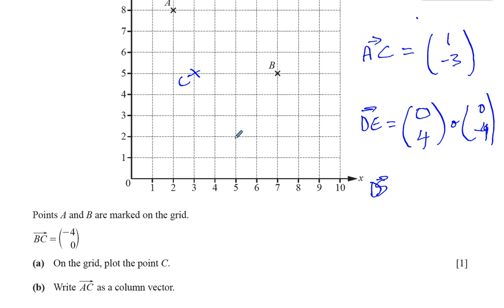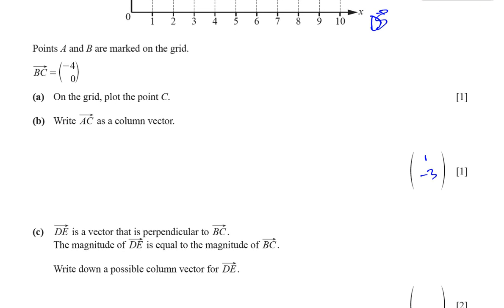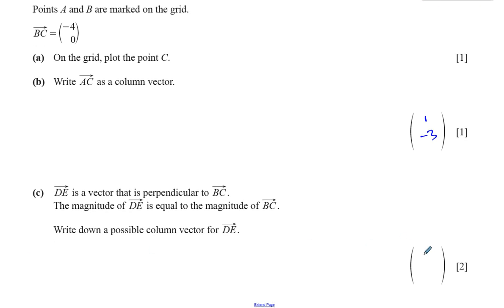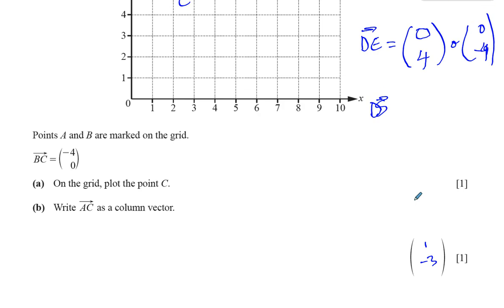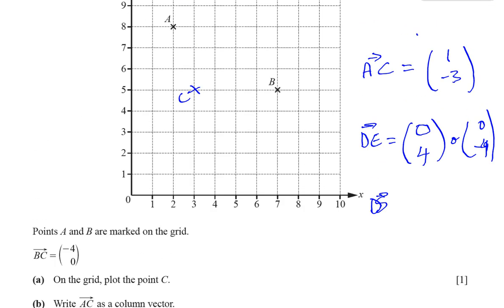0, 4 means it's going up and 0, minus 4 means it's going down. So 0, 4 or 0, minus 4, either of them would be the correct answer. So I can put 0 and 4. And there we have the end of that question. Question number 14, A, B, and C all done together. Thank you very much for listening.